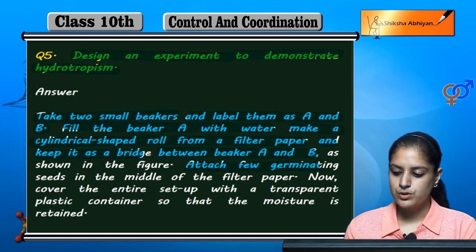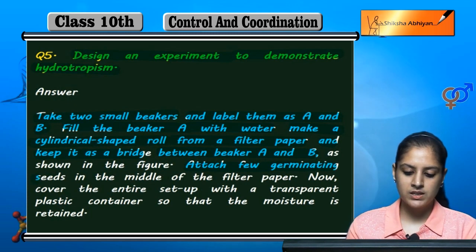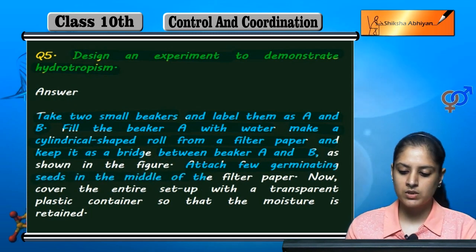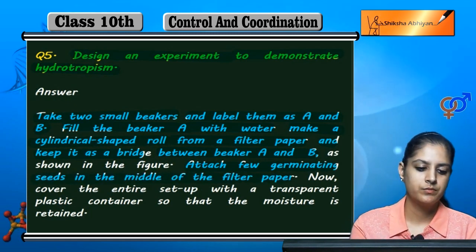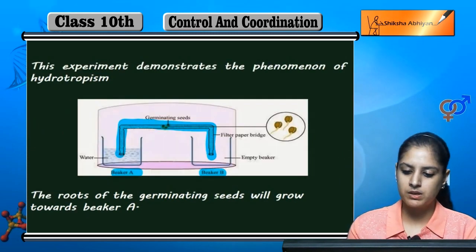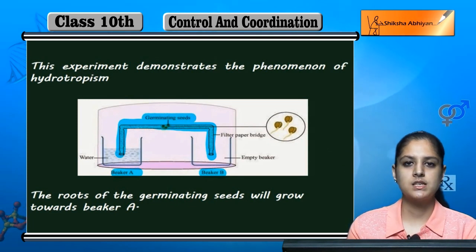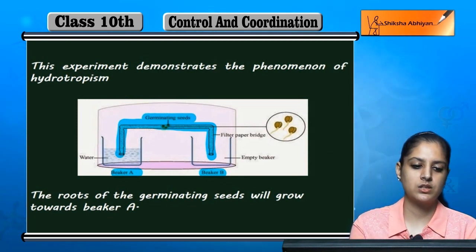Now, attach a few germinating seeds in the middle of the filter paper bridge.